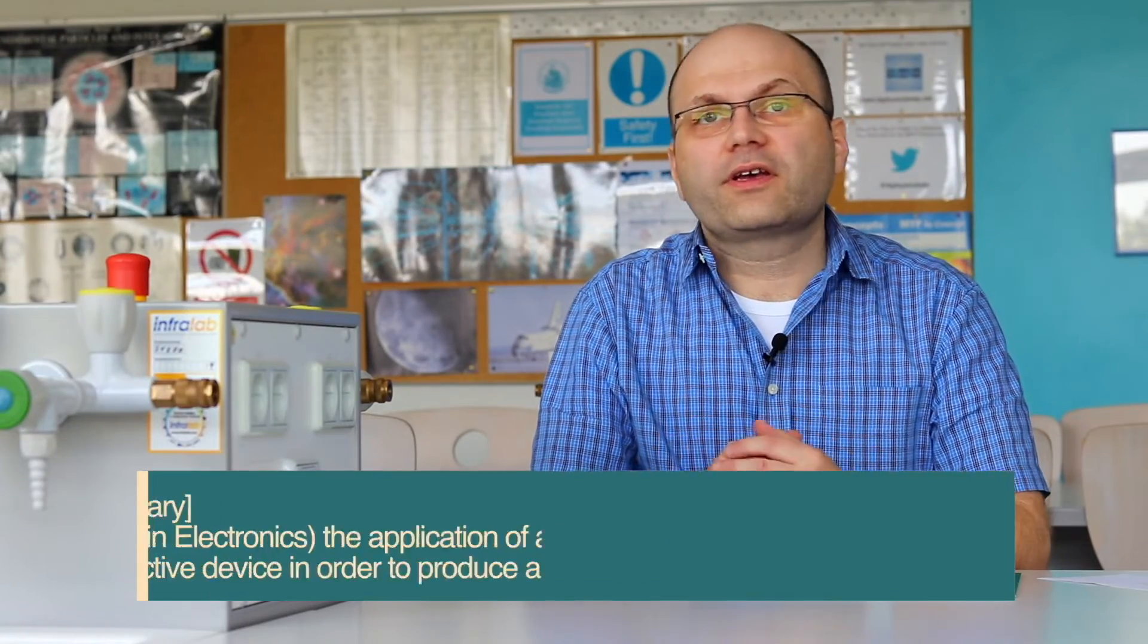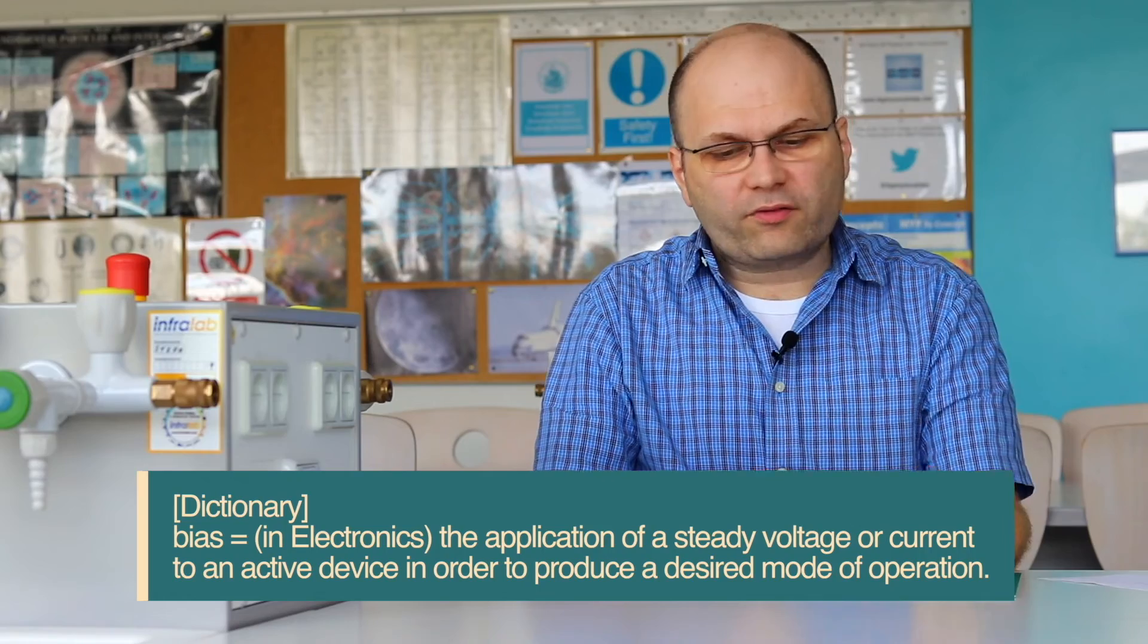Two quick side notes. We saw that there was no significant reduction in the brightness of the light bulb, which suggests that the resistance of a diode is relatively small. In fact, the resistance of an ideal diode is considered to be zero when forward biased,